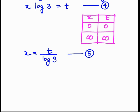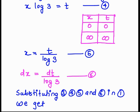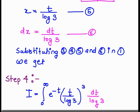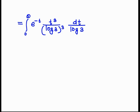Now we find the value of dx. By taking the derivative, we get dx equal to dt upon log 3. Substituting all these values into equation number one, we get I equal to the integral from 0 to infinity of e raised to minus t times x raised to 3, where x is t upon log 3 raised to 3, and dx is dt upon log 3.